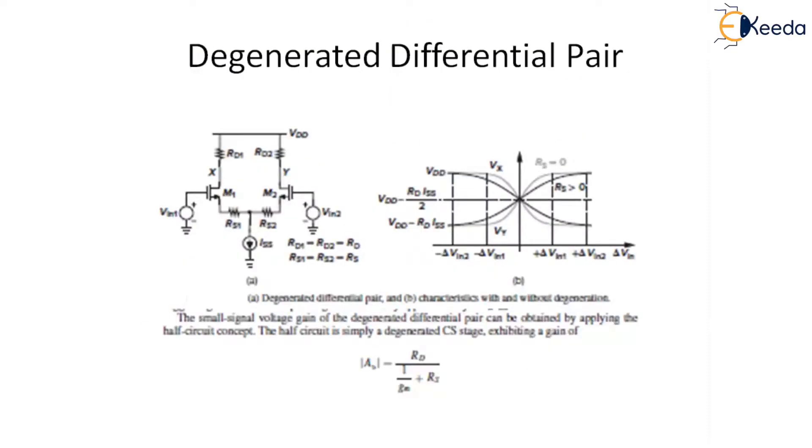As with a simple common source stage, a differential pair can also incorporate resistive degenerations to improve its linearity. As shown in this figure, such a topology softens the non-linear behavior of M1 and M2 by RS1 and RS2.